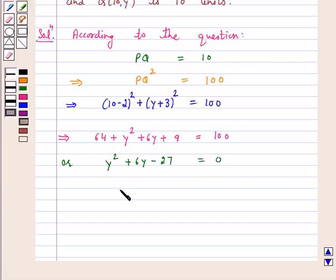Now, let's find out the factors of y. So this is equal to y² plus 9y minus 3y minus 27 is equal to 0.